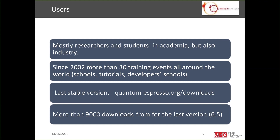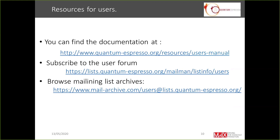Whoever wishes to download the latest stable version can download it from this link. The last stable version, 6.5, is registered with more than 9,000 downloads to date. Resources for users to help run the code may be found on the Quantum Espresso site. An important resource is also interaction with other users via the mailing list, and many questions have already been proposed and answered there, so you can browse previous posts to find answers and instructions.